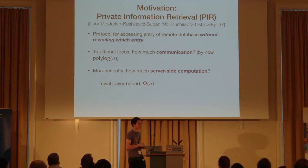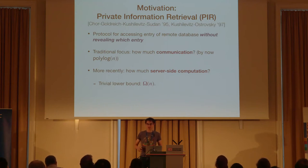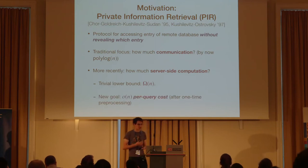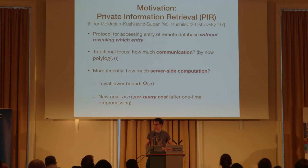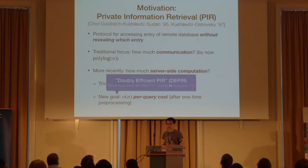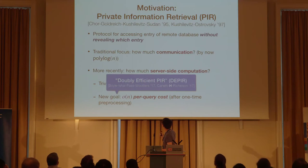There is a trivial linear lower bound on the amount of work the server needs to do, because if it doesn't touch some bit of the database, then you know the client is not looking at that bit. Still, we're going to try to do better than that by allowing the server to do some pre-processing. This notion — where not just the client but also the server runs in sublinear time — was termed doubly efficient private information retrieval at TCC two years ago.